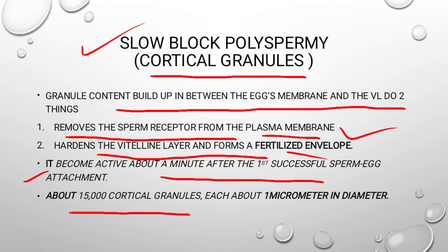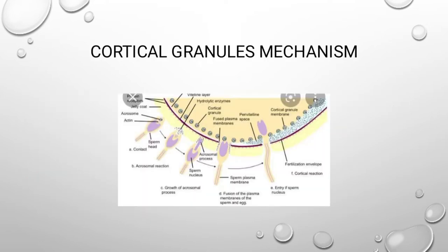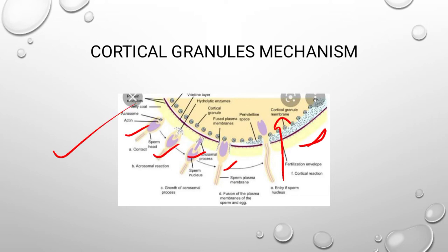This becomes active about one minute after the first successful sperm-egg attachment. There are about fifteen thousand cortical granules, each about one micrometer in diameter. In the cortical granular mechanism diagram, the egg membrane is shown with sperms outside. As the first sperm enters, the receptors on the membrane for binding remaining sperms are removed or blocked. When receptors are removed, the sperms are unable to attach to the plasma membrane receptors and ultimately the reaction stops. This is called the cortical granule mechanism.